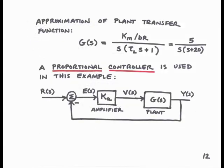If we ignore the electrical dynamics because they're so fast, then our transfer function can be approximated as G of s equals Km over BR divided by s times tau L s plus 1. Using some typical numbers, we find this transfer function to simplify to 5 over s times s plus 20.